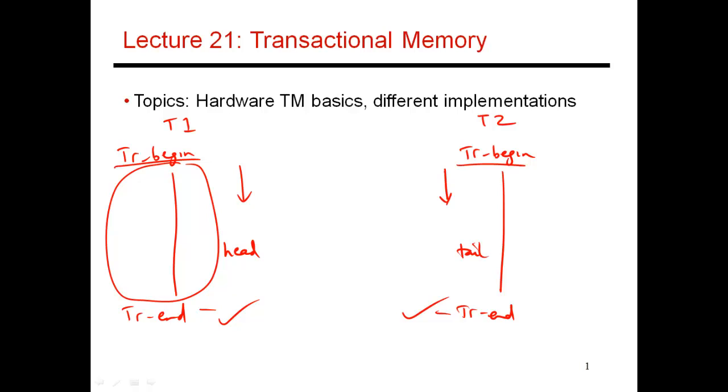The hardware is now responsible to see if there was a conflict between the values touched by transaction one and transaction two. If there's no conflict, both are allowed to proceed and you get high performance because both transactions executed in parallel.